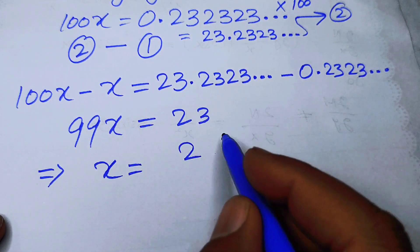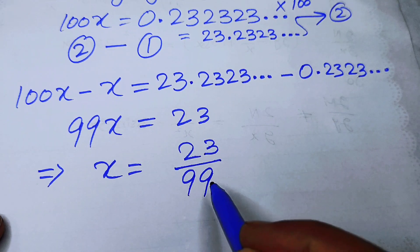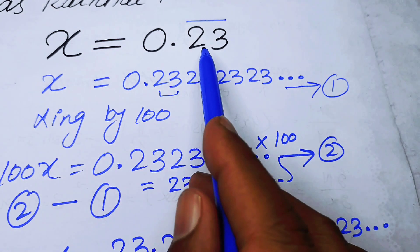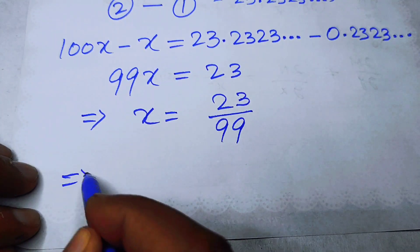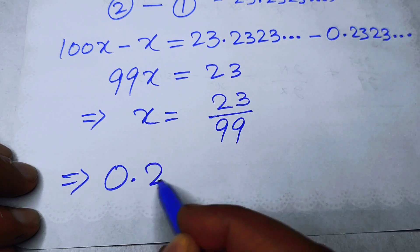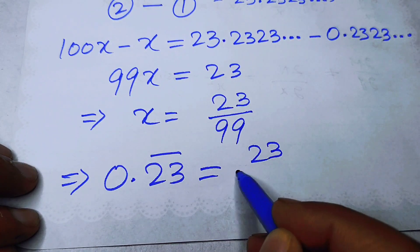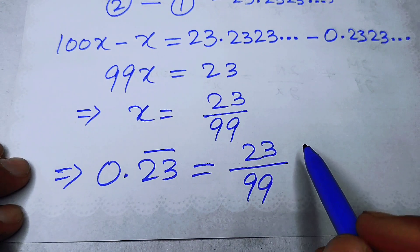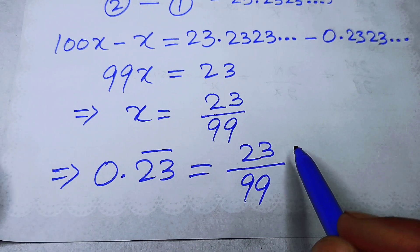Since we set x = 0.23 bar at the start, we obtain that 0.23 bar equals 23/99, and this is our required rational number. Thank you so much for watching this video — please subscribe to my channel for more exciting videos.